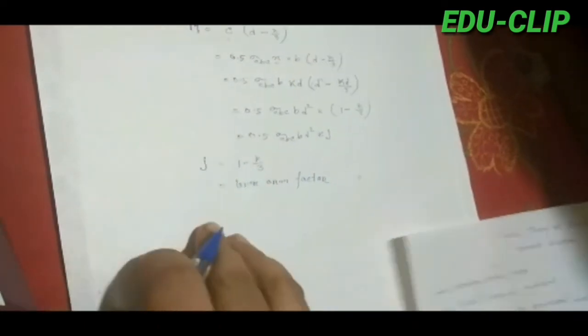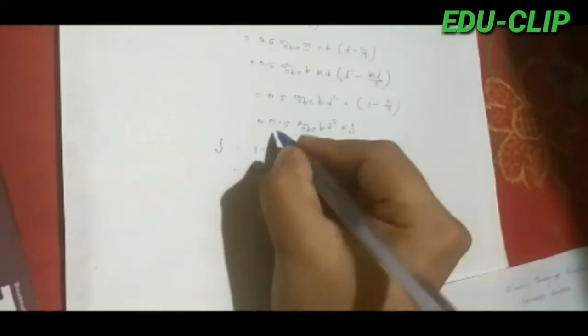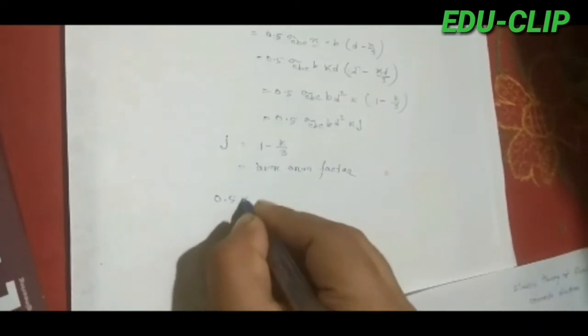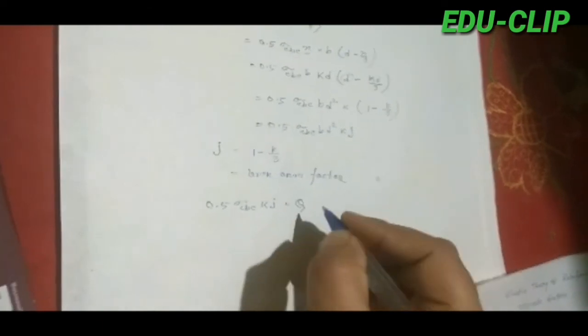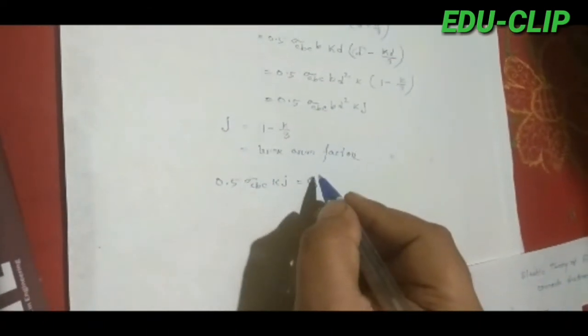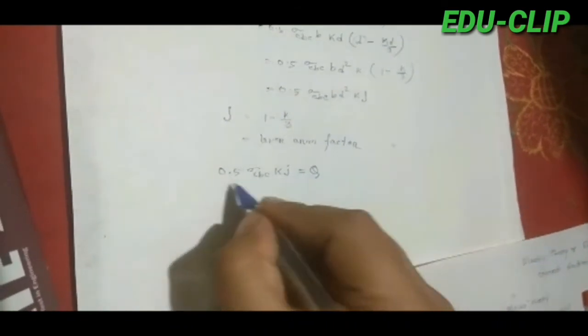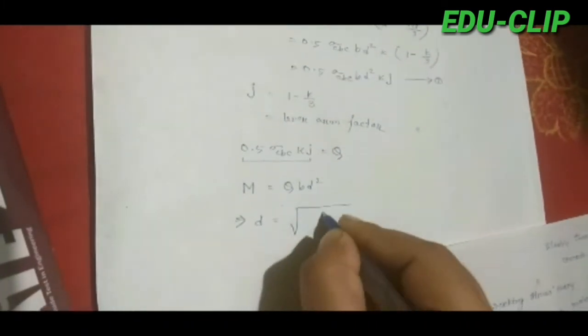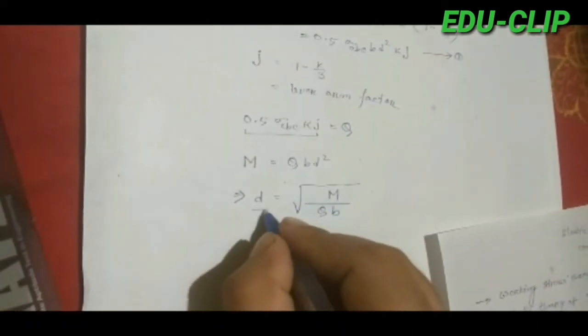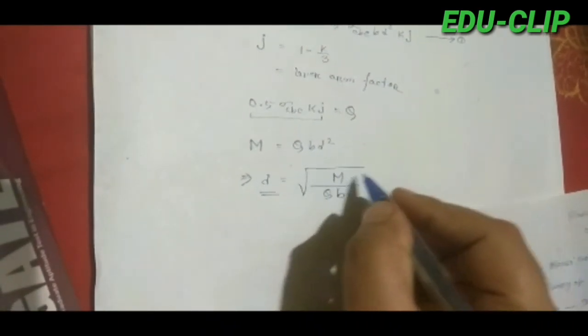This term (1 minus K/3) is written as J, where J = 1 minus K/3, and this is called the lever arm factor. So M = 0.5 · sigma_cbc · K · J · B · D². If we let Q = 0.5 · sigma_cbc · K · J, then M = Q · B · D², and from this, the effective depth D = sqrt(M / (Q · B)).